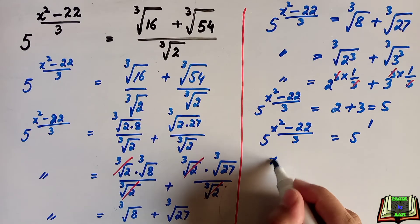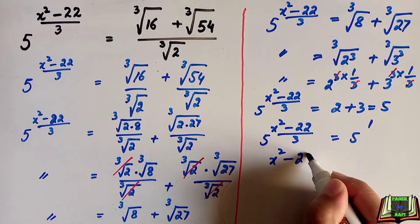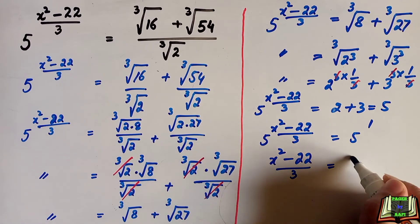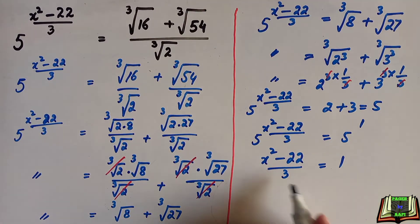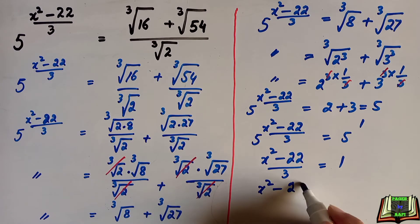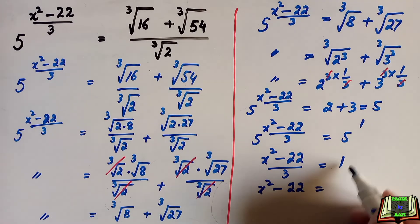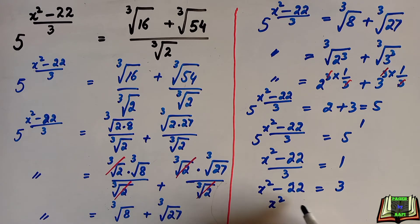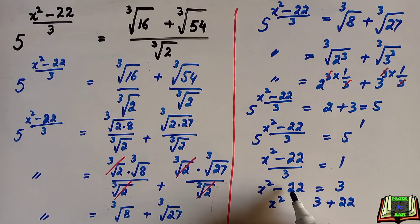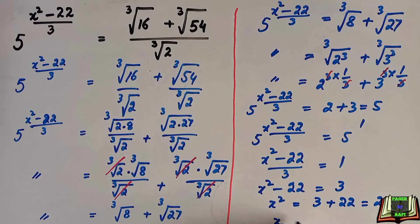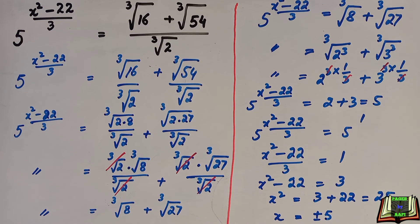Since the bases are equal, x squared minus 22 divided by 3 equals 1. Therefore x squared minus 22 equals 3. So x squared equals 3 plus 22, which equals 25, giving x equals plus or minus 5. This is the required answer — the value of x is plus or minus 5.